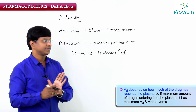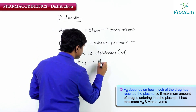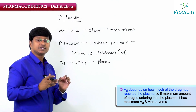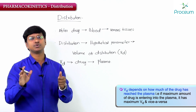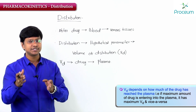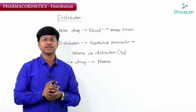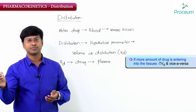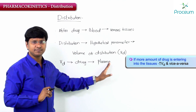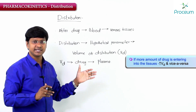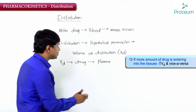The volume of distribution of the drug depends upon how much of the drug has reached into the plasma. If more quantity of the drug enters into the plasma — that is into the blood — then the volume of distribution will also be greater. If only minimal quantity of the drug enters into the plasma, then minimal will be the volume of distribution. The volume of distribution is also determined by how much amount of the drug is entering into the tissues from the plasma.